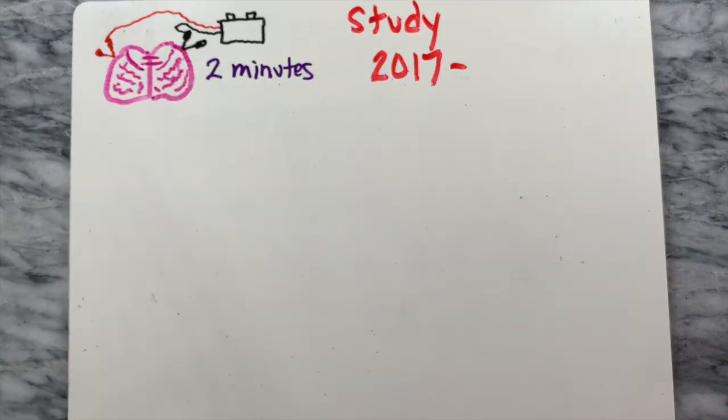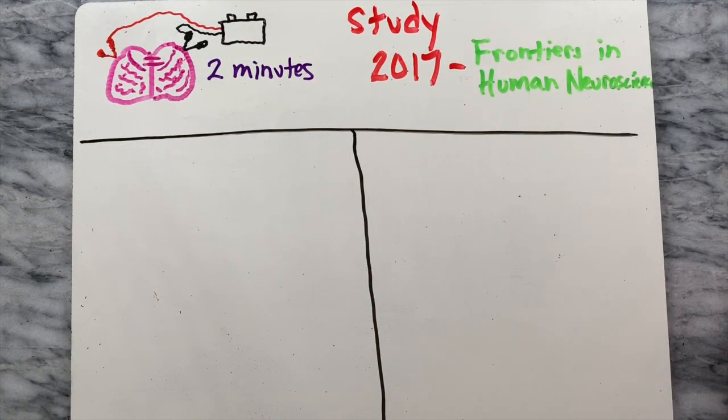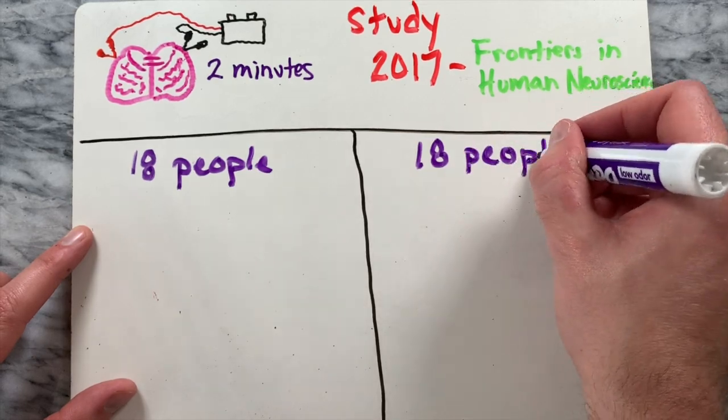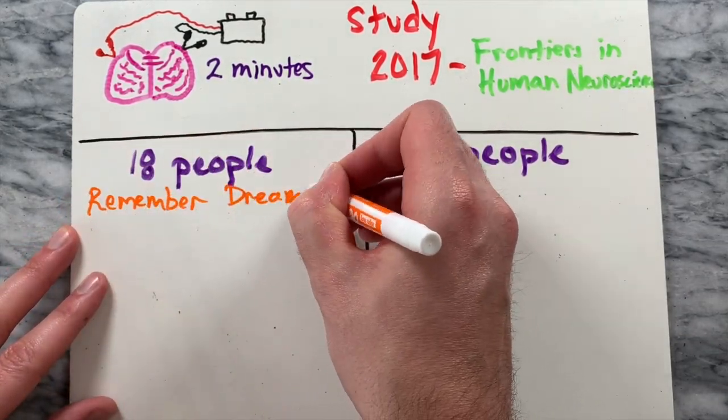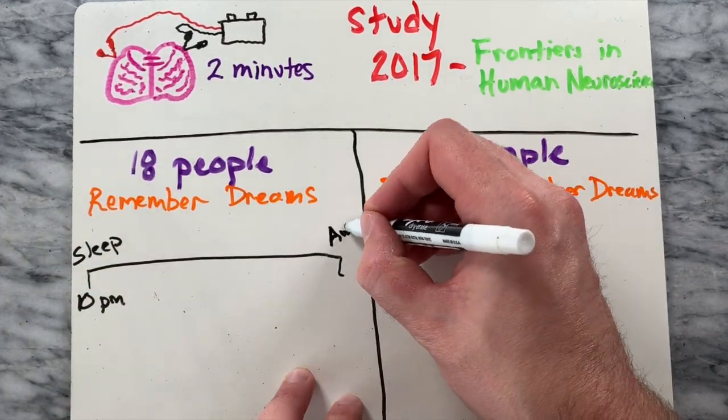Researchers in France monitored sleep patterns in 18 people who reported remembering their dreams almost every day and 18 others who rarely remembered their dreams. The team found that compared to the low dream recallers, high recallers woke up more frequently during the night.